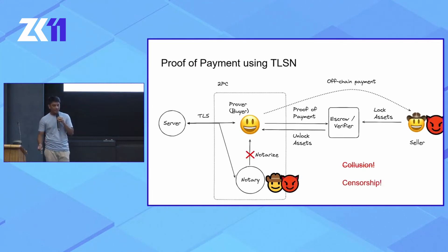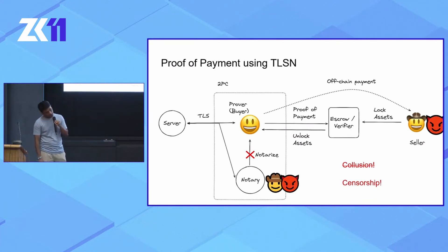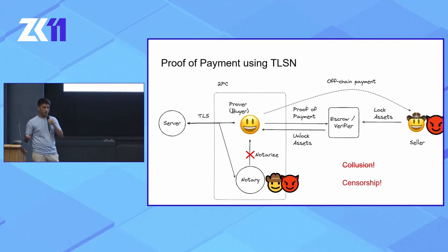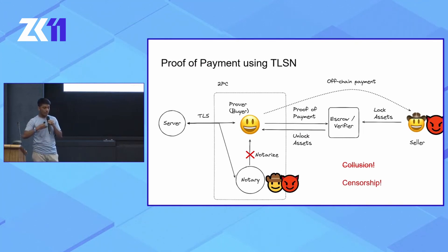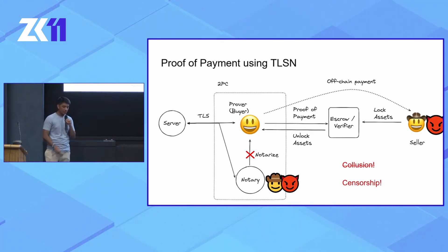But that introduces another attack by a malicious seller. After they receive the off-chain payment, they can shut down the notary and refuse to notarize the request. That means the prover can no longer generate a proof of payment and unlock their assets. There's also no way to prove that the seller is offline, so we cannot punish them. The only way out is to introduce a fallback notary. But because centralized servers could collude, we would have to introduce a decentralized network of notaries with an honest majority trust assumption. The UX in that case is very bad — you'd have to run the 2PC TLS verification with a majority of notaries, which is very bandwidth intensive and costly.